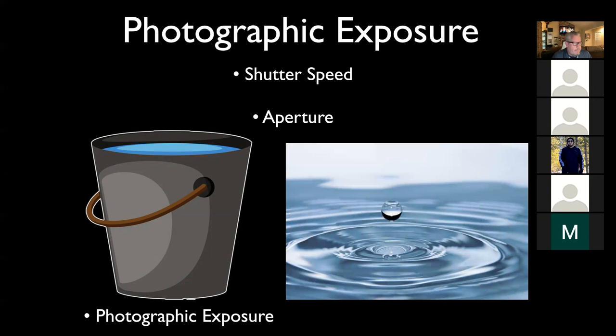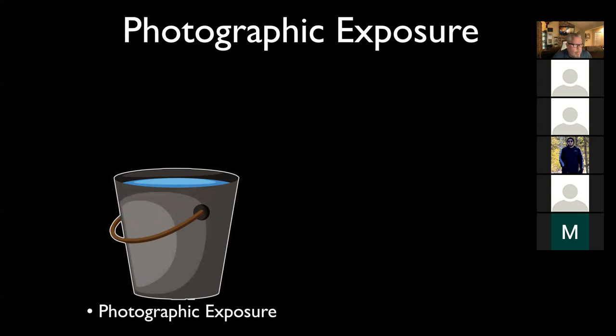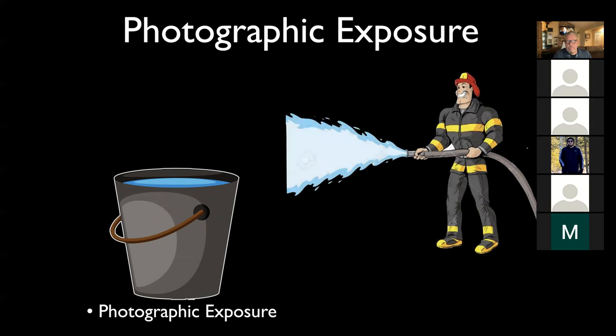The water is light, essentially. If I gave you a fire hose and you had to fill a one-gallon bucket full of water, the hose would represent the aperture - how large or how small the opening of your lens is. With a fire hose, you've got a pretty large aperture, a pretty big hole letting that water through.